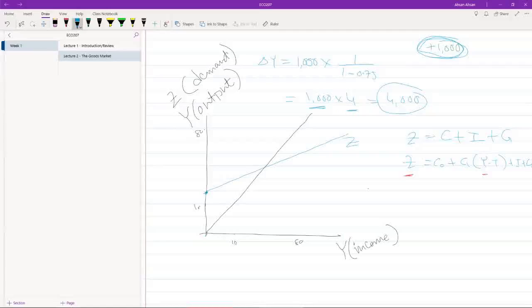At this point, the demand curve is intersecting the 45 degree line. That means at this point, demand is equal to how much income we have, which means this E here is the equilibrium.